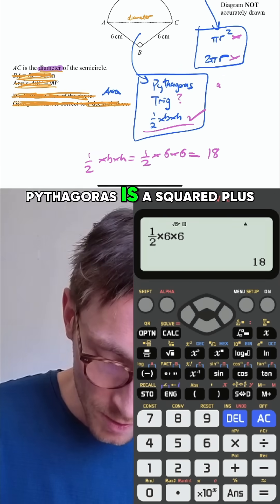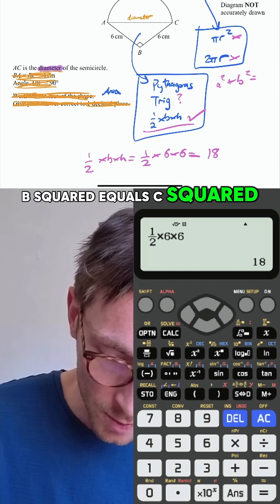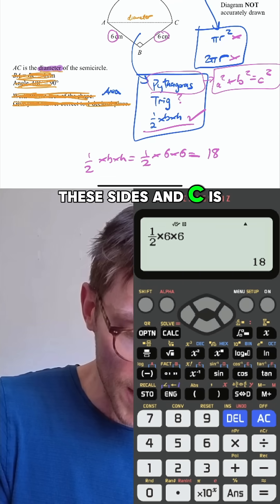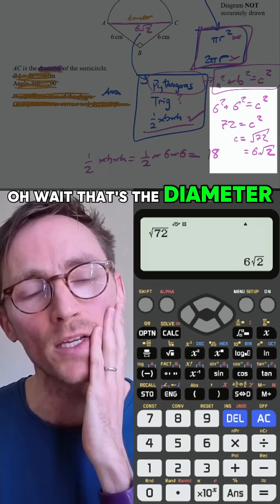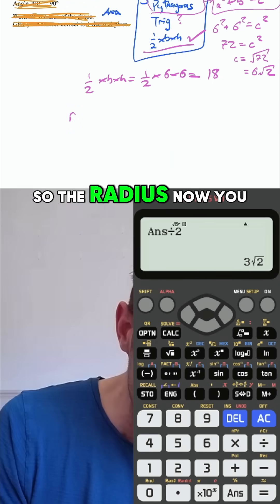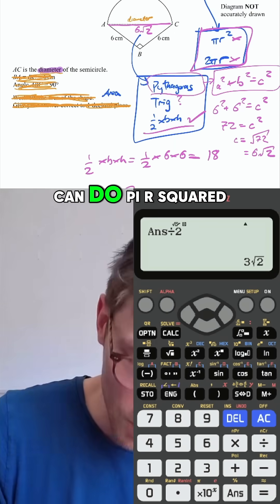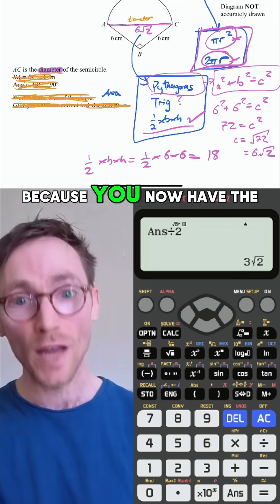So let's try and do Pythagoras. Pythagoras is a squared plus b squared equals c squared, where a and b are these sides and c is the long one. So let's do it. Wait, that's the diameter. The radius is half of that. The radius. Now you can do pi r squared and 2 pi r because you now have the radius.